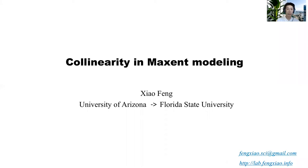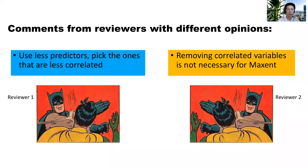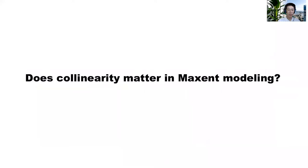Hello everyone. Today I will talk about linearity in MaxEnt modeling. I'm Xiao Feng. I have received comments from reviewers with different opinions. Some reviewers want me to use fewer predictors and pick ones that are less correlated, while the other group of reviewers have told me that removing correlated variables is not necessary for MaxEnt. All those different opinions got me trying to ask the question: does collinearity matter in MaxEnt modeling? And this is what I will talk about today.